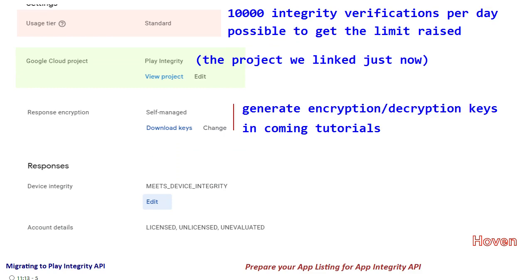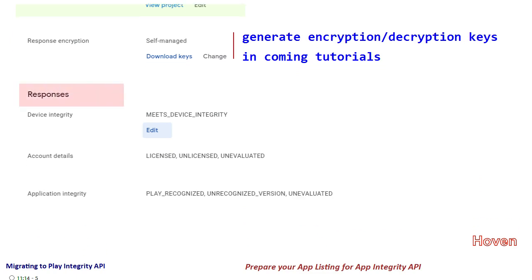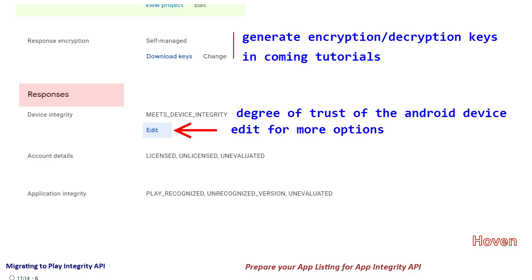We shall come to the encryption keys in later tutorials, as they will be required for the programming side. Then we have the Responses tab, which shows the various types of responses your app intends to receive from the Integrity API. Device Integrity Information contains information on the degree of trust of your Android device. By default, it tells us whether the device is trusted or not — just a yes or no. But we can tweak the setting to include additional information, such as whether the device is a Google-certified device or an emulator.